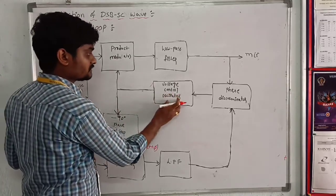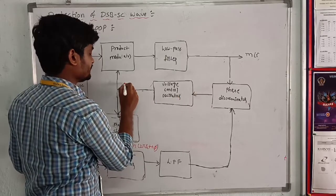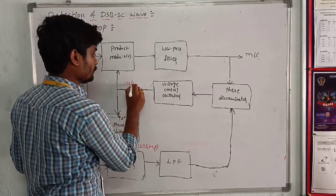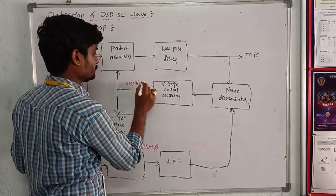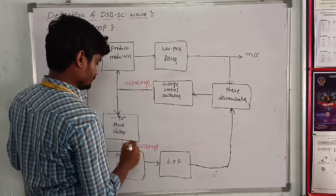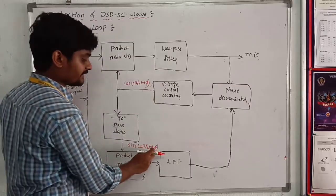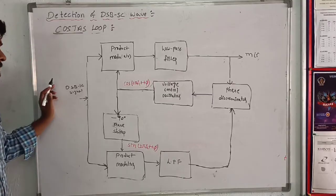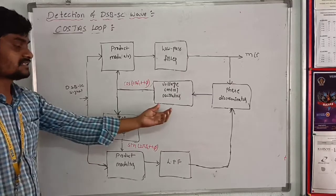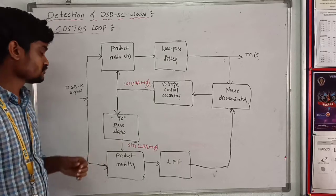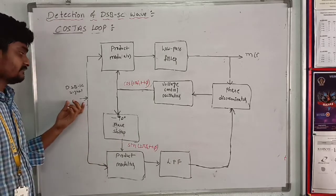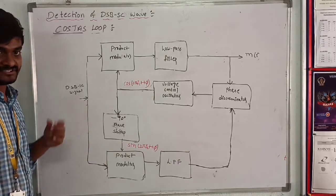The voltage controlled oscillator generates a signal cos(2π fc t + φ) and out of phase sin(2π fc t + φ). The local oscillator frequency is adjusted to the carrier frequency fc.